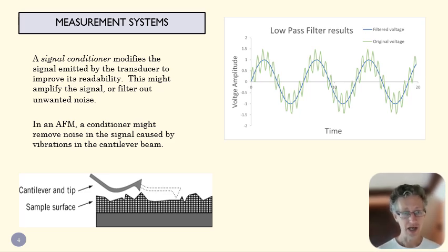So in an AFM, say, for instance, this little needle as it bounces along here might actually experience some vibrations. We're not interested in those vibrations, we just want to know the position. And so we might filter out the high frequency vibrations so that we can see the position of the needle better with our signal.